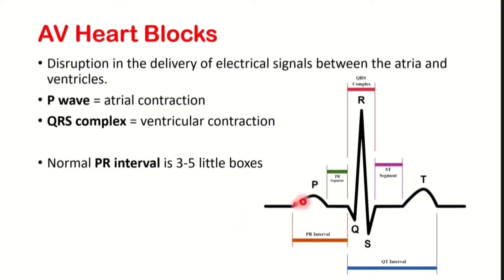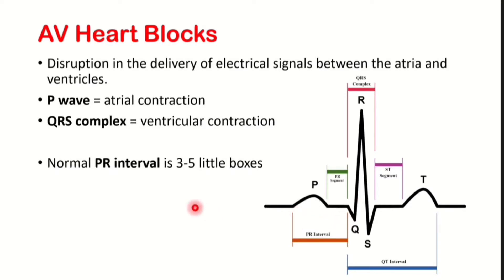The P waves represent the atrial contraction, while the QRS complexes represent the ventricular contractions. The PR interval goes from the start of the P wave to right before the Q wave, and it's usually normally between 3 to 5 little boxes.